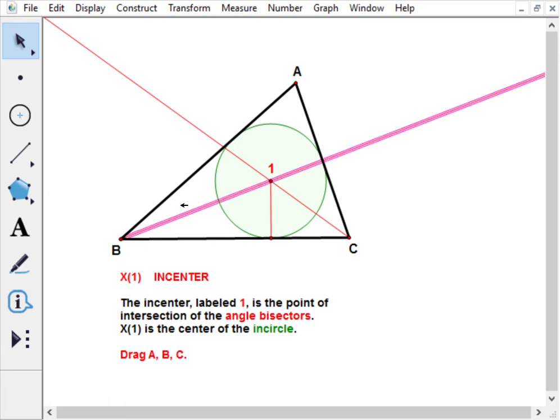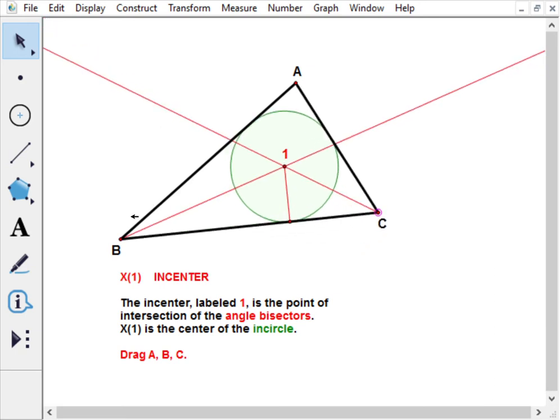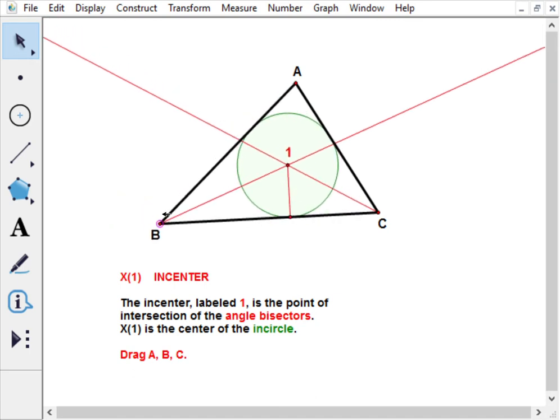There's one and there's another, and the place where they meet right here is the incenter X1. Because this is a dynamic geometry package, we can move these points around and see that the properties are maintained.